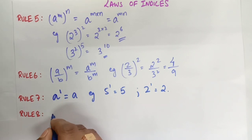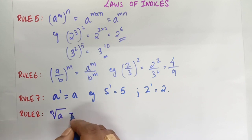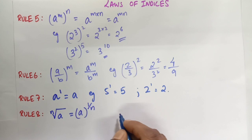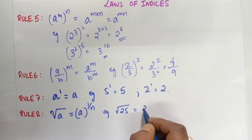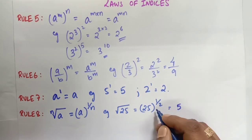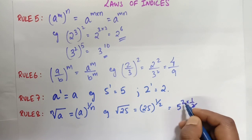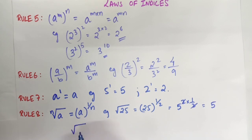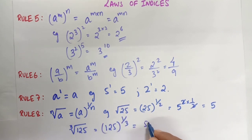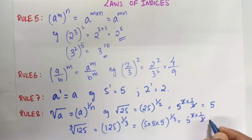Rule number 8: the nth root of a equals a to the power 1 over n. If there is a square root, we write the number to the power 1 over 2. For example, the square root of 25 is 25 to the power 1 over 2. Since 25 is 5 squared, we get 5 squared times 1 over 2, so the 2 cancels and we get 5. For the cube root of 125: 125 to the power 1 over 3 — since 125 is 5 cubed, we get 5.